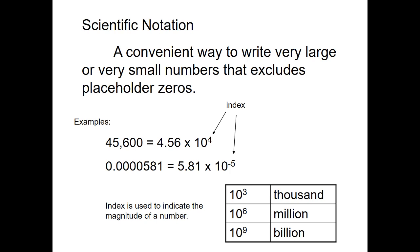Here are some very common powers of ten that translate to their names — you want to be familiar with these. Ten to the three is a thousand. Ten to the six is a million. Ten to the nine is a billion. If you're somewhere in between, you can attach the ten or hundred that you normally would — so ten to the seven would be ten million.